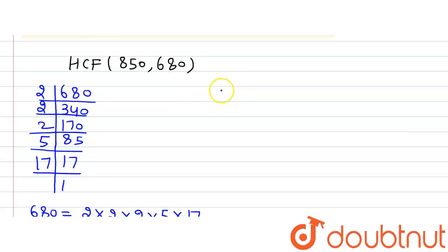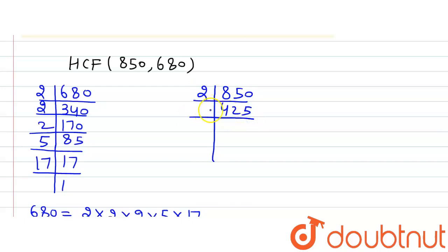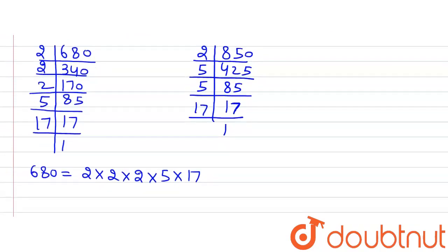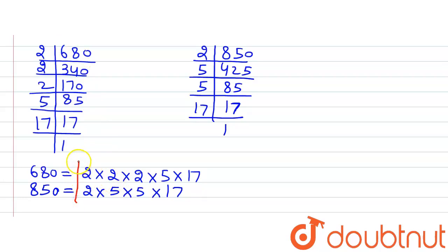For 850, dividing by 2 we get 425. Since 425 is not divisible by 2 or 3, we divide by 5 to get 85. Then 85 is also divisible by 5, giving us 17, which is a prime number divisible by itself only. So 850 can be written as a product of its prime factors: 2 × 5 × 5 × 17. Now if we observe the common factors in both 680 and 850...